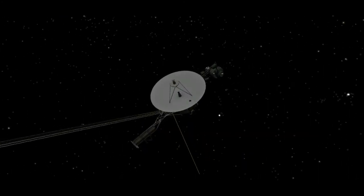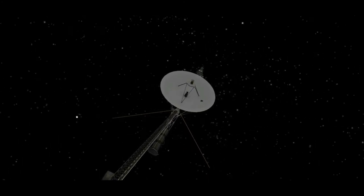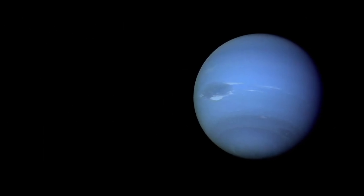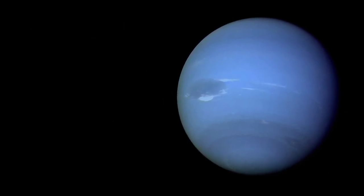Voyager 2 was the only spacecraft to fly past Neptune in 1989, capturing the first close-up images of the Neptunian system.